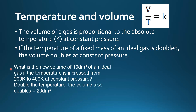Let's look at an example. What is the new volume of 10 decimetres cubed of an ideal gas if the temperature is increased from 200 K to 400 K at constant pressure? If you double the temperature the volume also doubles, so the new volume is 20 decimetres cubed.